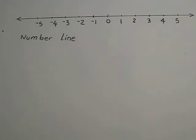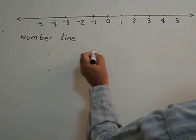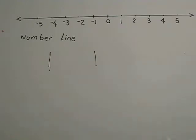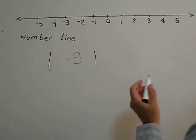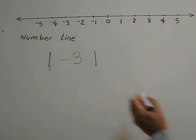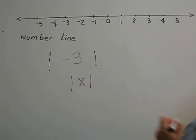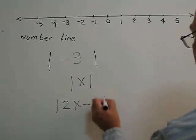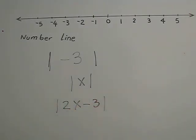Absolute value is written between two vertical bars — not brackets, not parentheses, but two vertical bars. So if I write negative three between vertical bars, this means absolute value of negative three. If I write X between vertical bars, this means absolute value of X. If I write 2X minus 3 between vertical bars, this means absolute value of 2X minus 3.